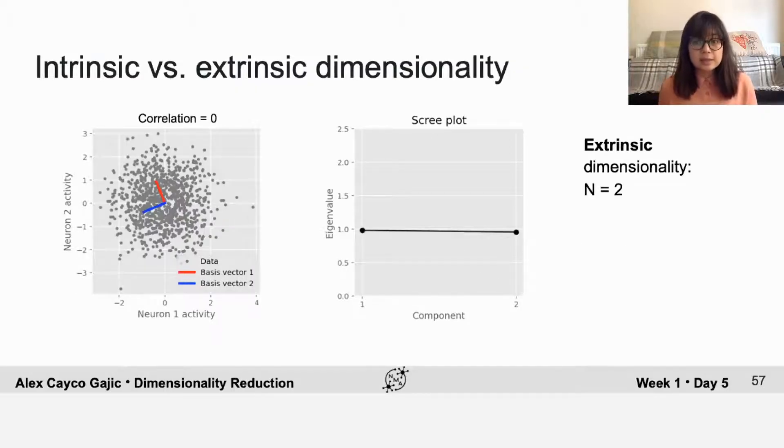On the other hand, in this example, you do actually need both of the coordinates from both basis vectors in order to describe the data. So in this case, the intrinsic dimensionality is also two in addition to the extrinsic dimensionality.